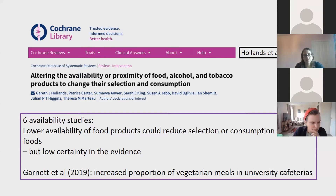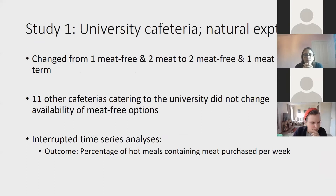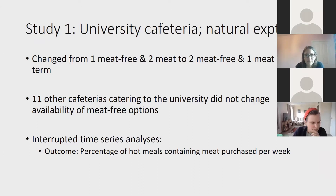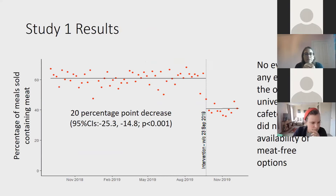By changing from 25% to 50% of vegetarian meals available, there was an eight percentage point increase in the university cafeteria. We wanted to build further on this evidence base. I'm going to report first about a natural experiment we did in one university cafeteria. For one term, they changed the availability of meal options from having one meat-free and two meat options, to two meat-free and one meat option. Eleven other cafeterias catering to the university didn't change their availability, so they serve as semi-controls. We did an interrupted time series analysis looking at the percentage of hot meals containing meat purchased before and after this change.